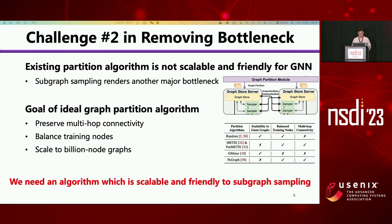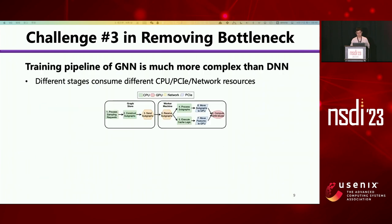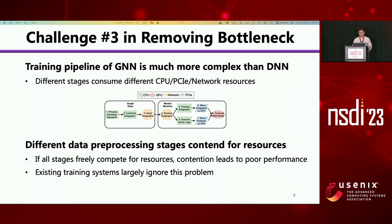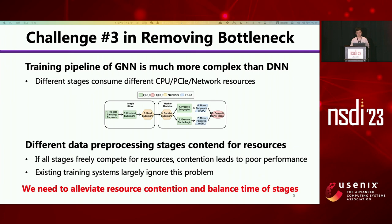Hence, we need an algorithm which is scalable and friendly to subgraph sampling. The third challenge comes from considering all training pipeline stages at the same time. We find the GNN training pipeline is much more complex than DNN training. Different stages consume different resources, leading to resource contention. We find that if the system lets all stages fully compete for resources, the contention leads to poor performance. Hence, we need to alleviate resource contention and balance the time of each stage.